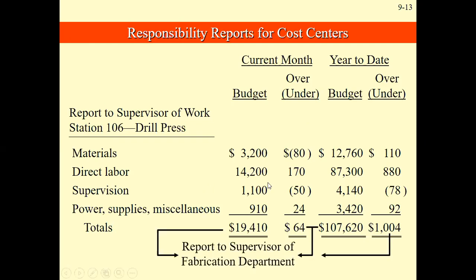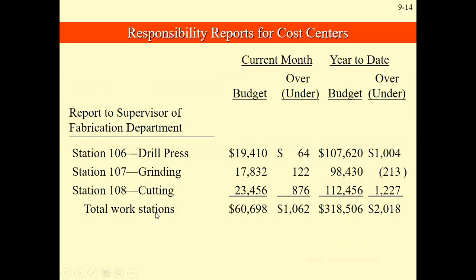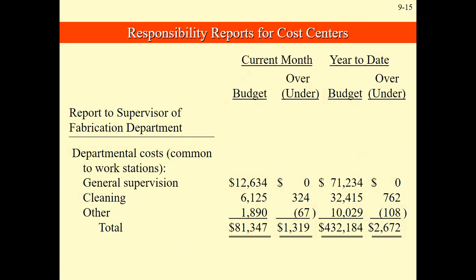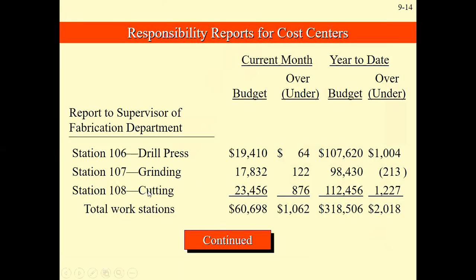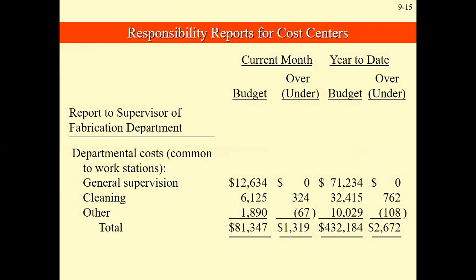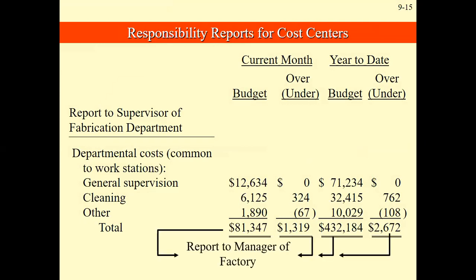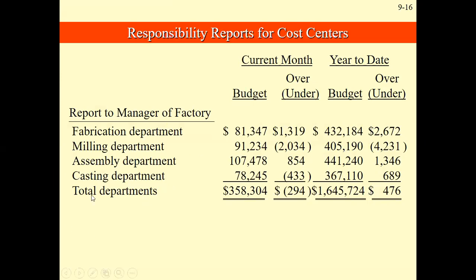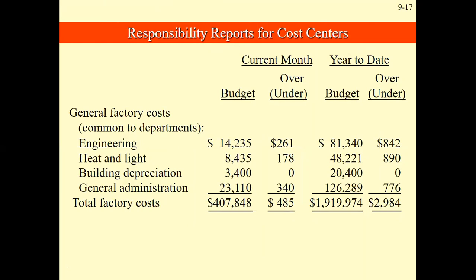From here, we report now to the supervisor of the fabrication department. Here are the different stations — 106, 107, and 108 — with budgeted amounts, current month and year-to-date, and variances similar to what we had before. These are also the departmental costs or common costs applicable to the previous three workstations. Then we report from the different workstations to the fabrication department supervisor, and then to the manager, who handles multiple departments. There are also common costs for the general factory for the overall manager.